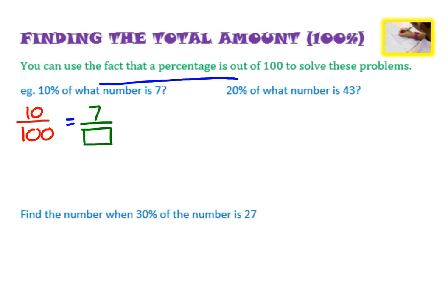So one strategy you could use is you could simplify the fraction on the left. So 10 over 100, you can divide them both by 10 to make it 1 over 10. So this is going to make life a lot easier. So 1 over 10 still equals 7 over our mystery number. And then you can start to think, that's a nice easy one to think. 1 times what equals 7? So 1 times 7 equals 7. So you could multiply the bottom number by the same amount to get the mystery number. So if 1 equals 7, 10 must equal 10 times 7, which is 70.